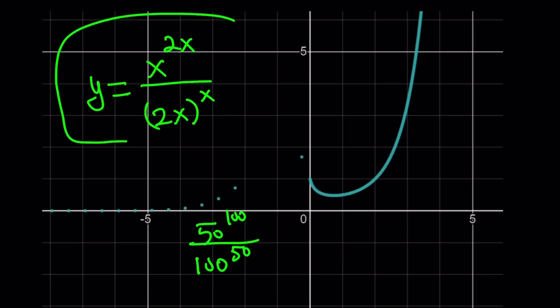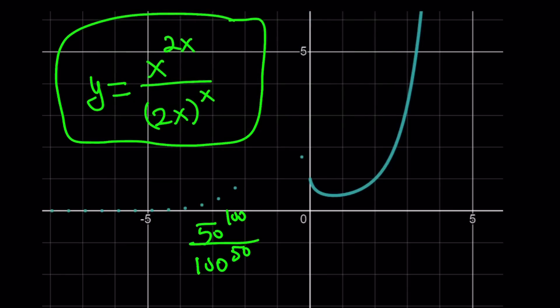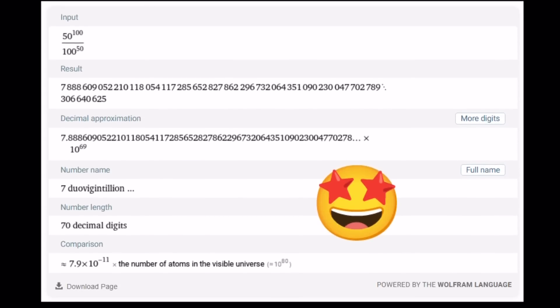And later on, we're also going to talk about how we can simplify this in general form. Because it's also interesting that this thing can be simplified in general form. One of the cool things about generalizing something is that you have a formula that you can apply to many situations. Let's go ahead and take a look at the numerical value.